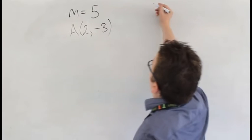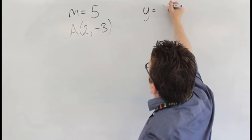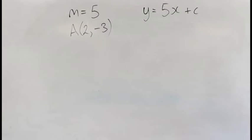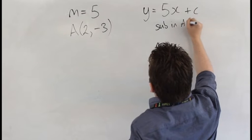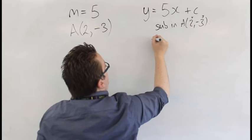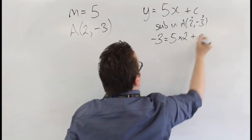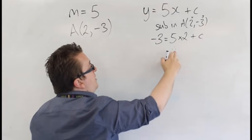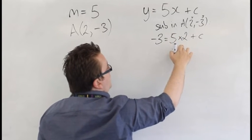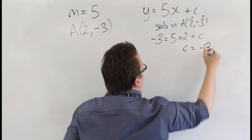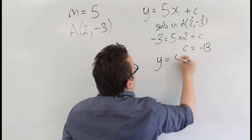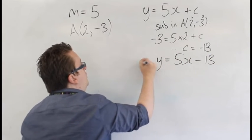So, one way of doing that is to use our tried and trusted method, so that means we're looking at y equals 5x plus c, because the 5, the gradient, goes in front of the x, and then you can sub in A. So the x is 2, the y is minus 3, minus 3 is equal to 5 lots of 2 plus c, so therefore, we have minus 3 take away the 10, so we've got c is equal to minus 13. So therefore, we have 5x minus 13 as being the equation that we're looking for.